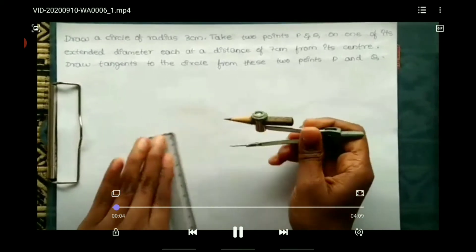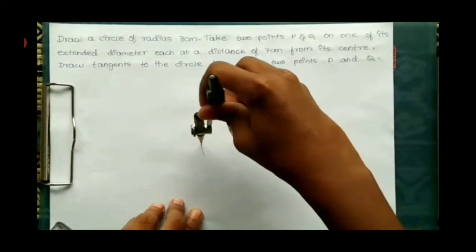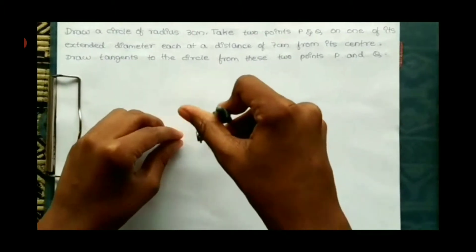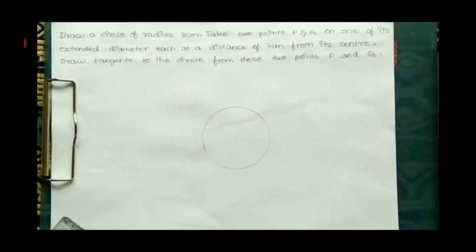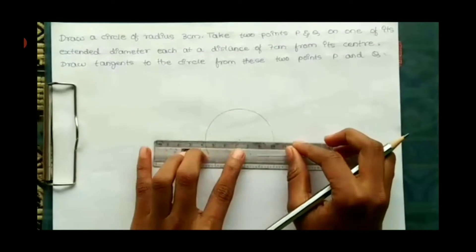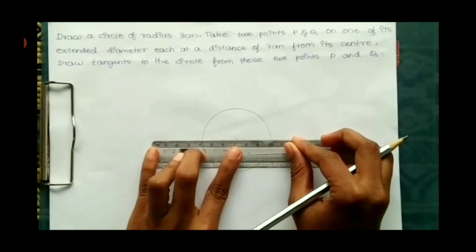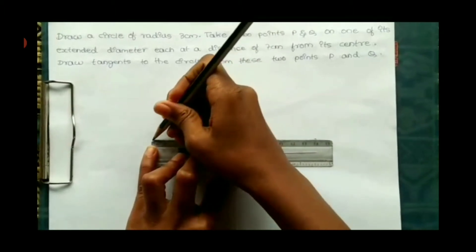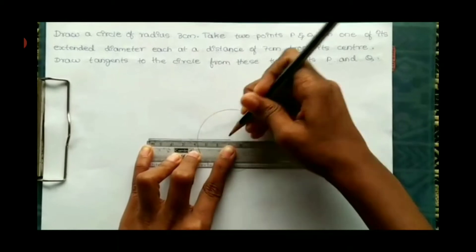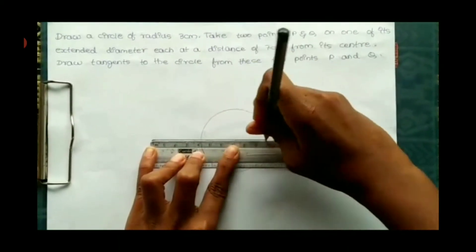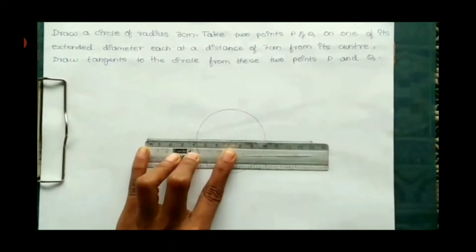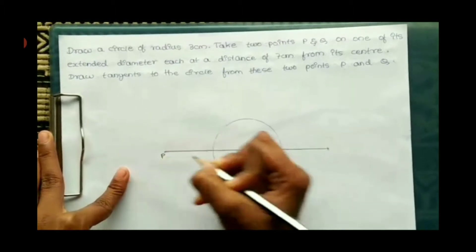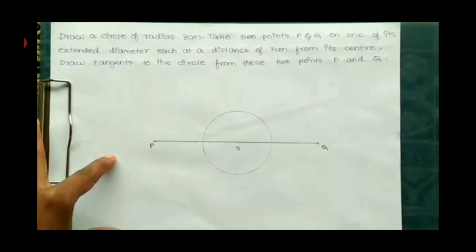Draw the circle of 3 cm radius, measure 3 cm radius and draw the circle. You will get a center, and from that center draw the line passing through it. The distance between P and Q is 14 cm, because P and Q are each at a distance of 7 cm from the center. Draw the line of 14 cm — the endpoints are P and Q, on the extended diameter. This is the point O, which is the center of the circle; this is point P and this is point Q.